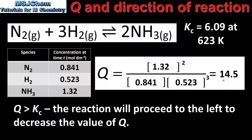If we compare the value of the reaction quotient Q with the equilibrium constant Kc, we can see that Q is greater than Kc, so the reaction will proceed to the left to decrease the value of Q.